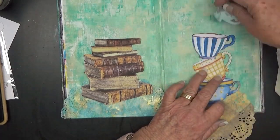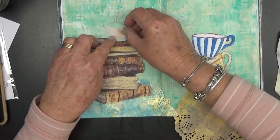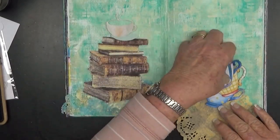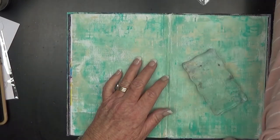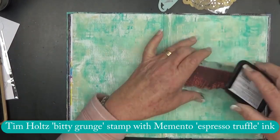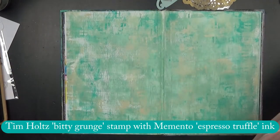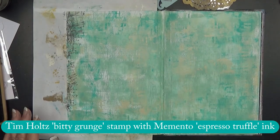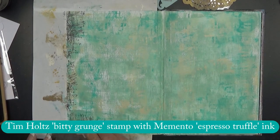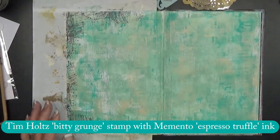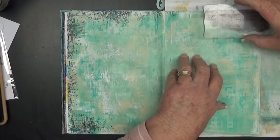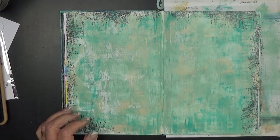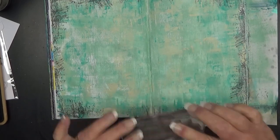Still trying to work out how I'm positioning the cups and I think I'm happy with that. So now I'm going to do the border stamping. This is a stamp from the Stampers Anonymous Tim Holtz Bitty Grunge stamp set. And I'm using Memento Espresso Truffle dye ink I think it is.